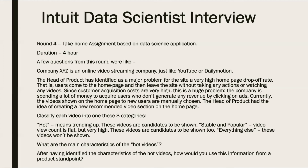The last round was a take-home assignment with a duration of around four hours. The question was: you are at a video streaming company similar to YouTube or Dailymotion, but there is a huge problem — customers who visit the site leave without taking any action. The manager has decided to divide the videos into three categories, so you have to identify the main characteristics of those categories and how you would use them. After deciding your answer, you had to create a full report and submit it within four hours. The overall process took around one to two weeks, and after clearing all four rounds, you receive the offer letter.